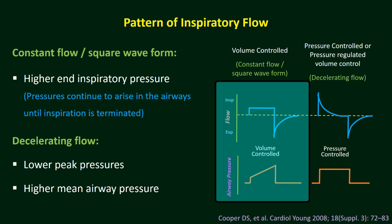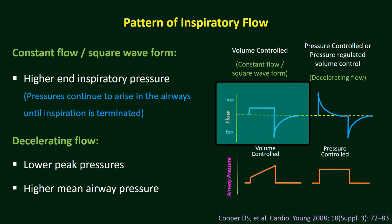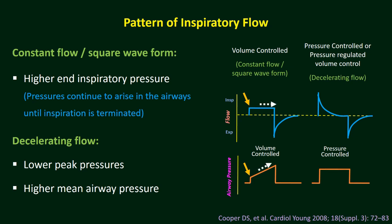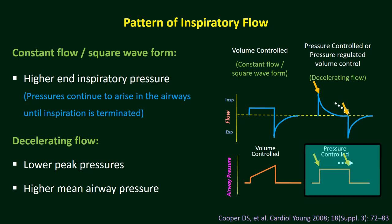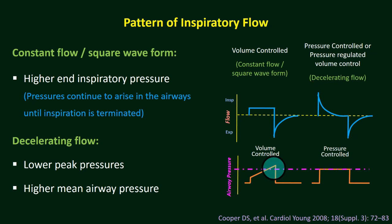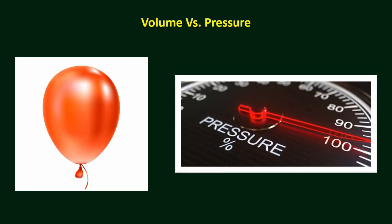These are the flow and pressure waveforms of volume control ventilation. The flow waveform in volume limit ventilation is a square or constant flow waveform — maximum flow is delivered at the beginning of inspiration and the same amount continues until the end. In pressure limit ventilation, flow is delivered at the beginning of inspiration to reach the peak inspiratory pressure, then there is a decelerating flow throughout inspiration. In pressure limit ventilation there is a fixed amount of pressure throughout, but in volume control ventilation there is higher pressure at the end of inspiration due to constant flow.